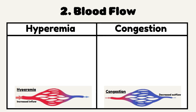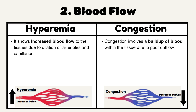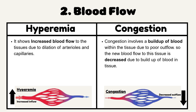Number 2: Blood Flow. Hyperemia shows increased blood flow to the tissues due to dilation of arterioles and capillaries. Congestion involves a buildup of blood within the tissue due to poor outflow, so the new blood flow to this tissue is decreased due to the buildup of blood in the tissue.